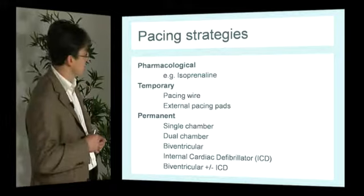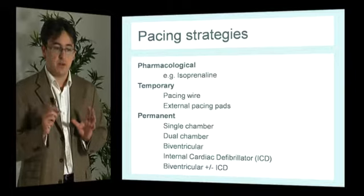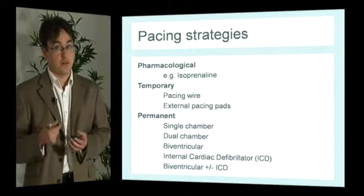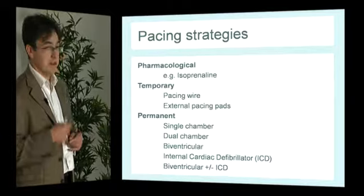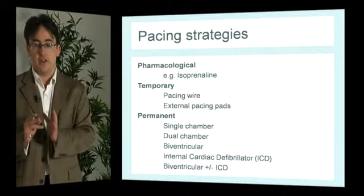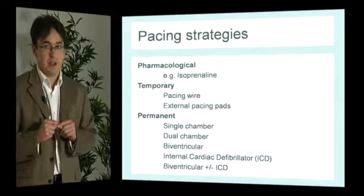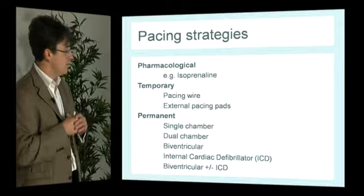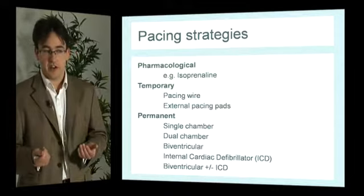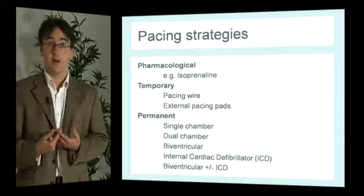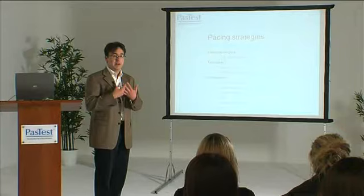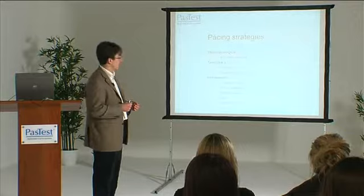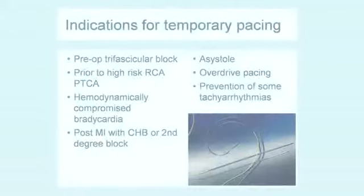If patients are likely to need a permanent pacemaker, implanting it immediately is by far the best option, though this isn't always possible. Pacemaker options include: a single-chamber ventricular device; a dual-chamber device with atrial and ventricular leads; a biventricular pacemaker with atrial, right ventricular, and coronary sinus leads for left ventricular pacing; an internal cardiac defibrillator for patients presenting with VF or VT; or a combined biventricular pacemaker with ICD for managing heart failure.